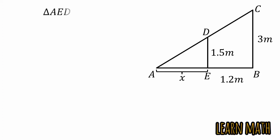So, we can write triangle AED is similar to triangle ABC. When they are similar, we can write AE divided by AB is equal to ED divided by BC. By putting values here, we will get this.